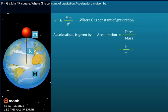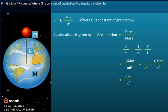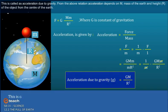F/m = (1/m) × (F/1) = GmM / (mR²) = (1/m) × GmM / R². Cancelling m on both sides, we get g = GM / R². This is the acceleration due to gravity.